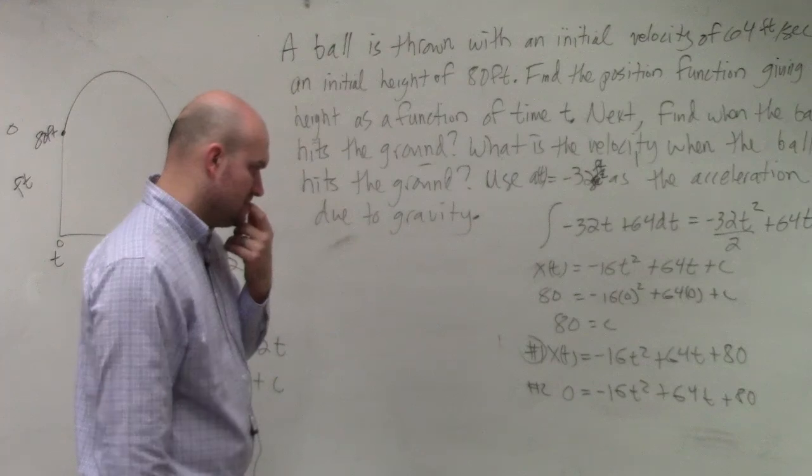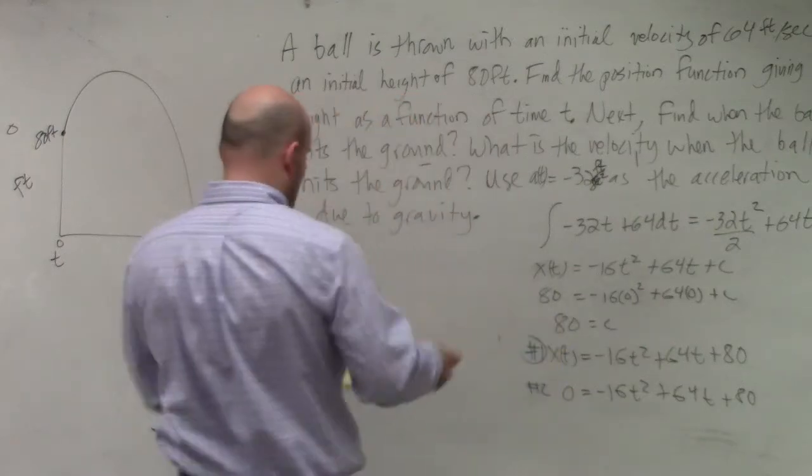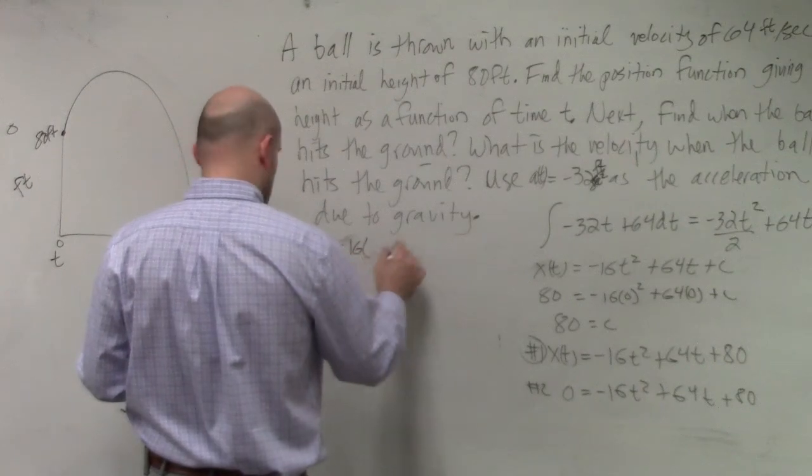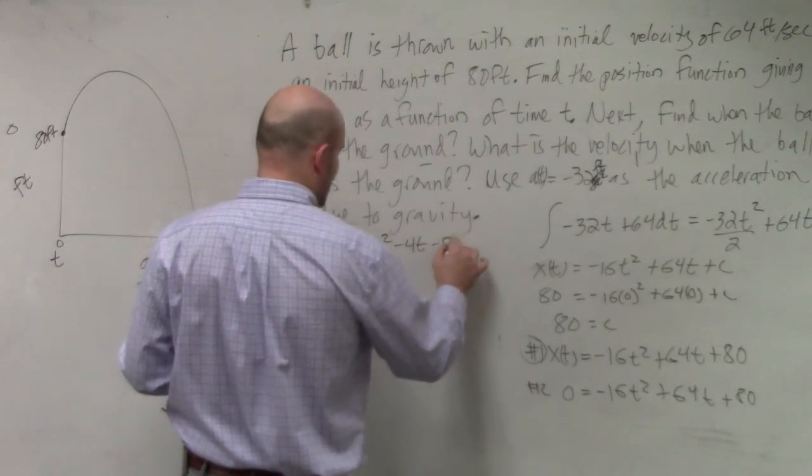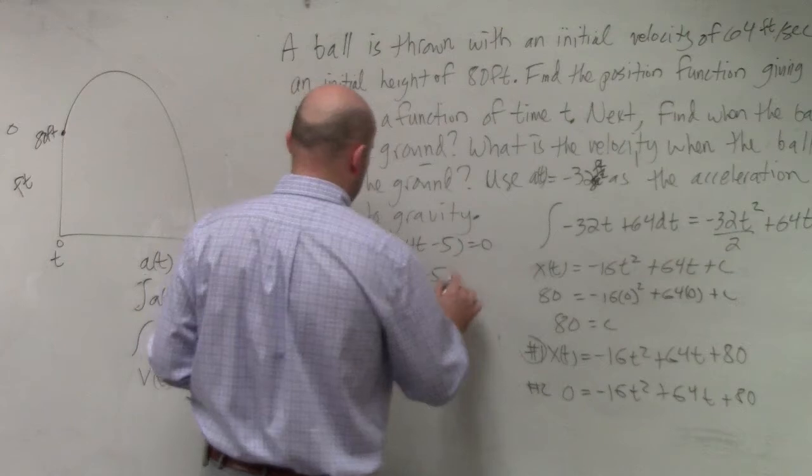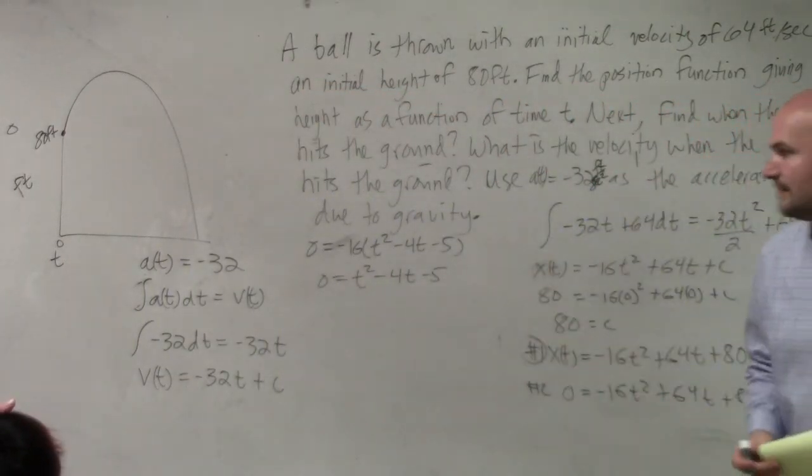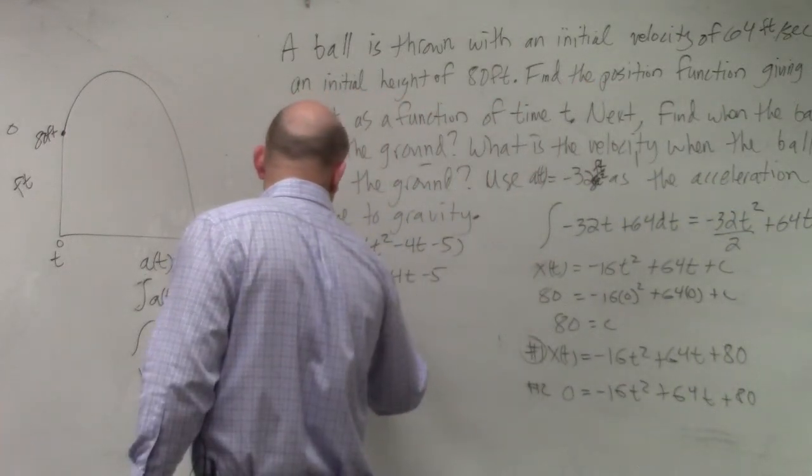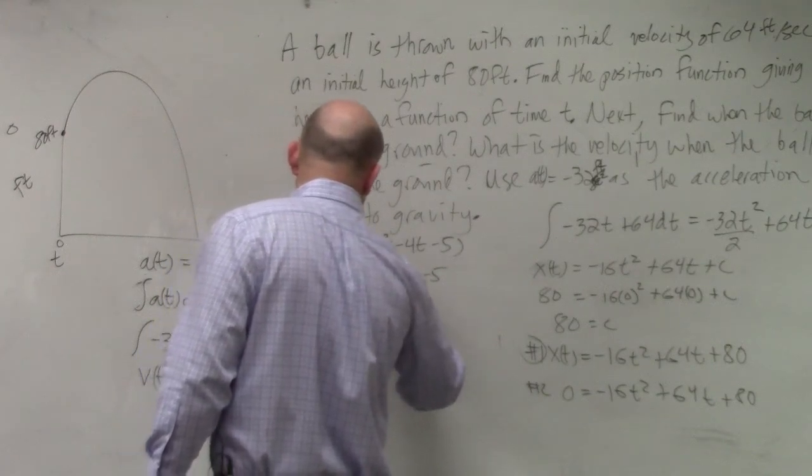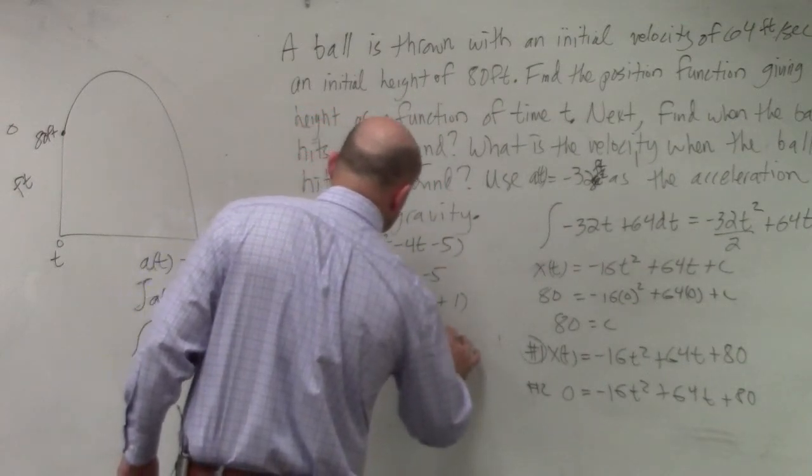And I can factor out a 16, right? No? 32, 64, 70, 80, yeah. So if I factor out a 16, I'm left with 0 equals a negative 16. 16 t squared minus 4t minus 5 equals 0. 0 equals t squared minus 4t minus 5. So basically divide the 16 on both sides. And then I can factor that into t minus 0 equals t minus 5 times t plus 1.